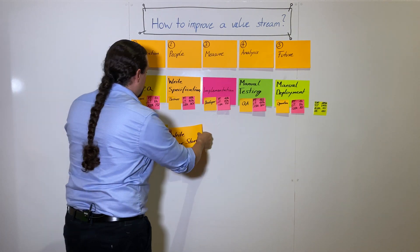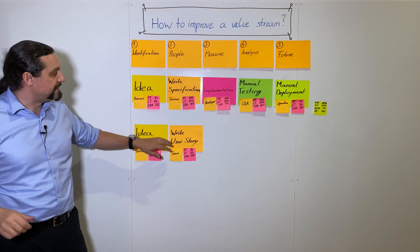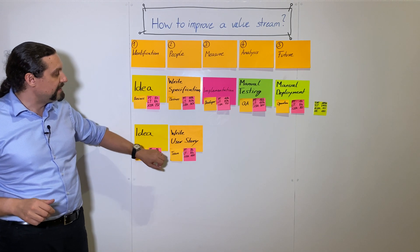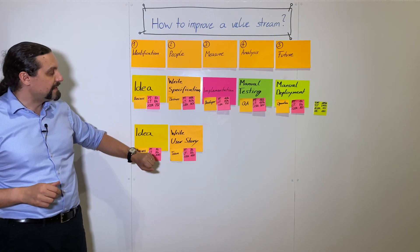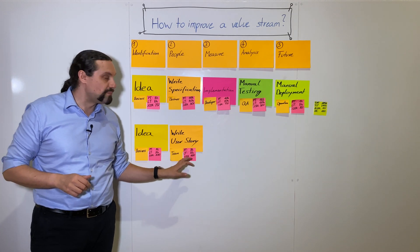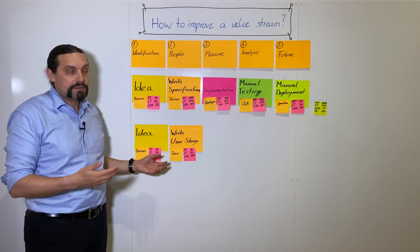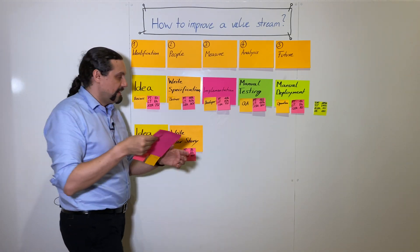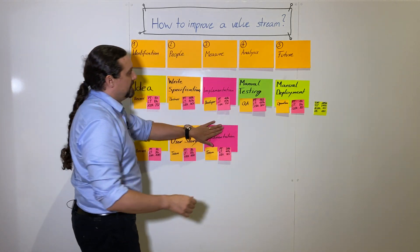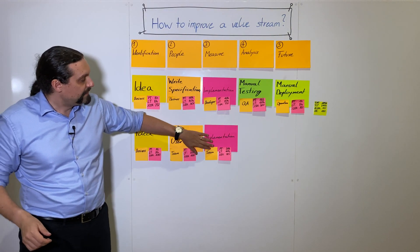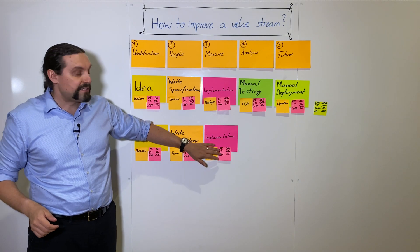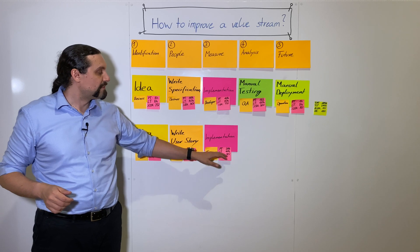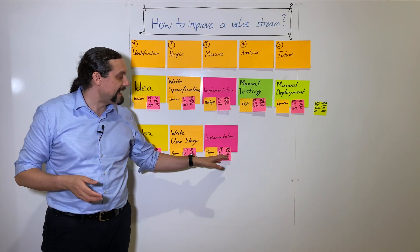We are going to no longer write specifications — instead we are going to write user stories, and this will be written by the team, with a process time of eight hours, lead time of eight hours, and a target percentage complete accuracy of 100 percent. We don't want to have any rework in our target system. Then we have the implementation step — again the team does this, with a process time of 20 hours, lead time of 40 hours, and percentage complete accuracy of 80 percent.